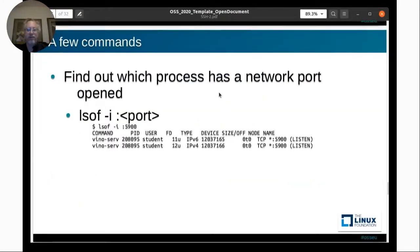You can find out which process has a network port open using lsof -i, which gives information about ports. Give it a colon and the port number — for example, to see which processes have port 5900 open.